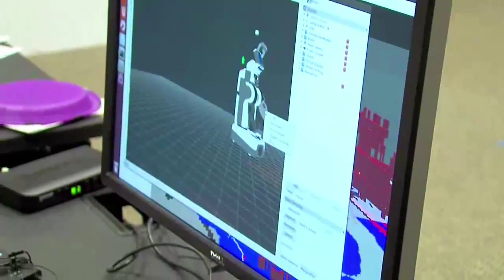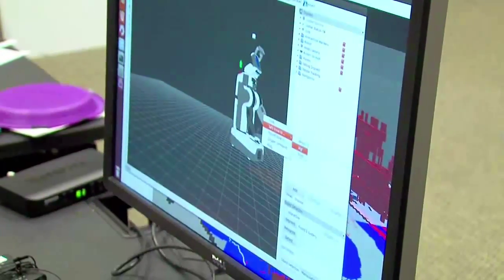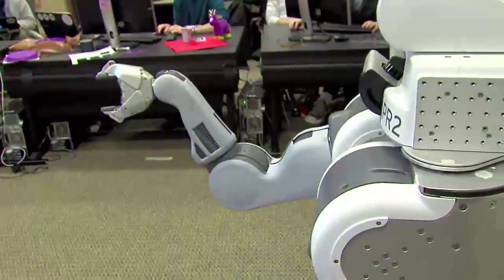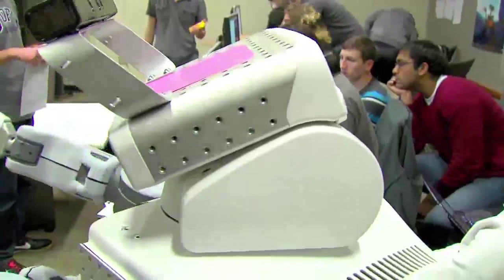For the first month, the students just learned about the actuators. So they learned how to make the robot move forward, move its arms to preset positions, or move its head around.